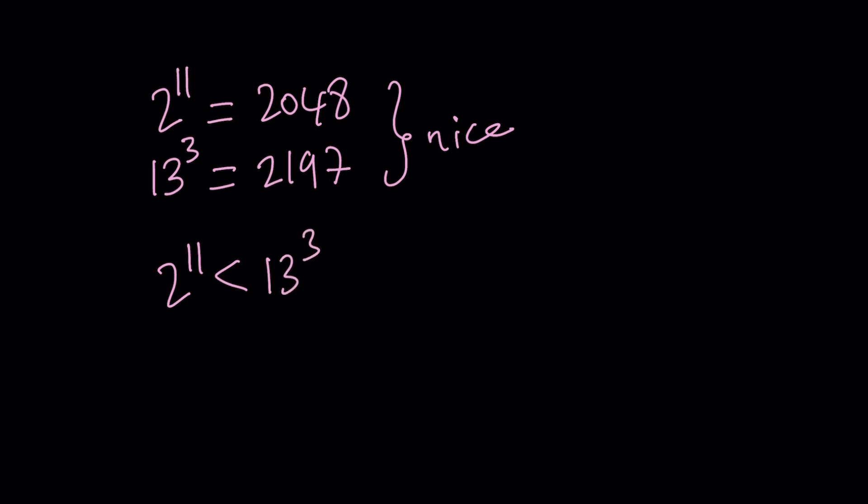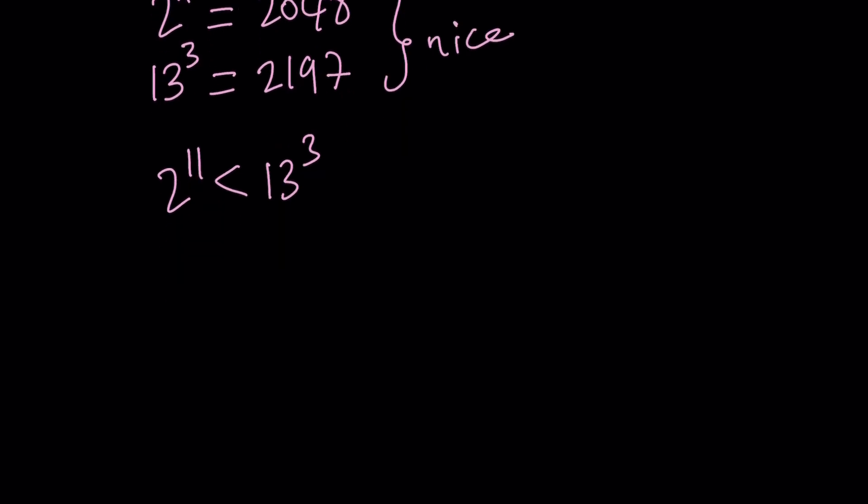Okay. But how do you transition to 2 to the power square root of 13 from here? Right? Why is the thing? This implies 2 to the power 11 over 3 is less than 13. What did I do? I raised both sides to the power of 1 third.